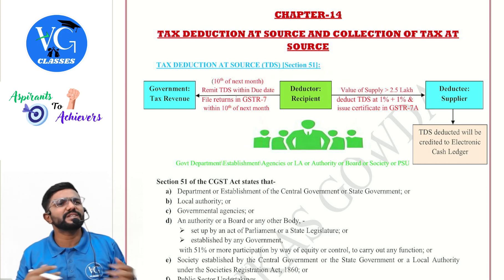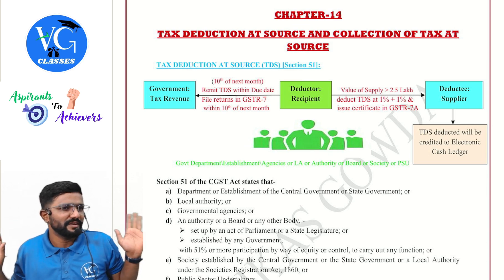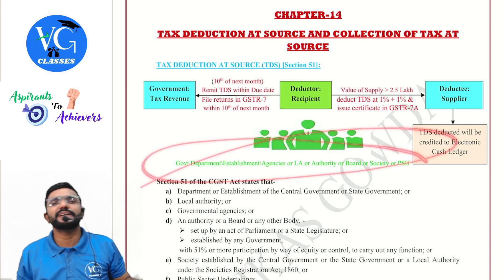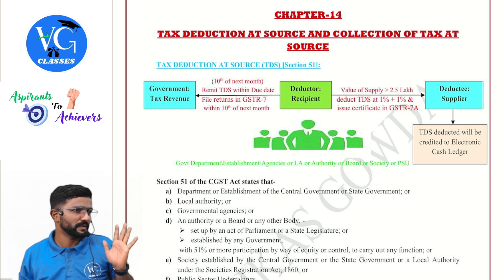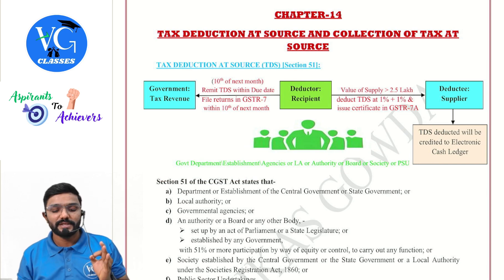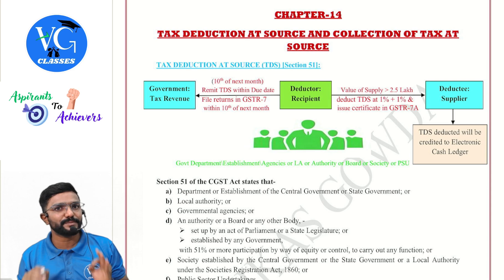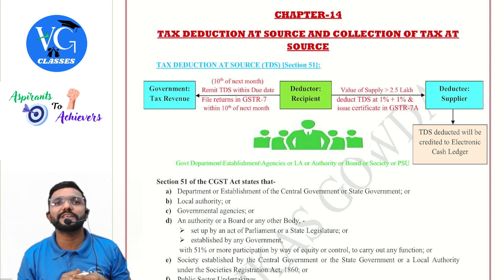You may ask — what if the deductor is a regular person not covered in this list? Should they deduct TDS? No. You must remember who the payers are. The payers — the recipients — if they are government entities, they must deduct TDS. Please be careful: it is the recipient making the payment, not the supplier.